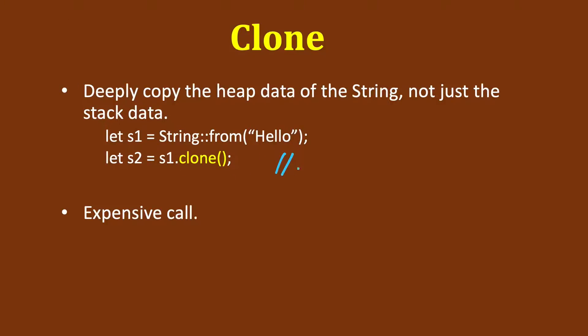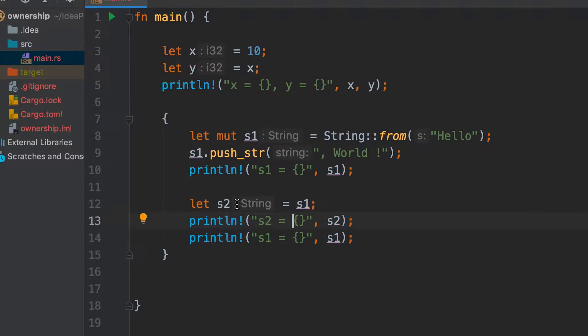Earlier it was s2 equal to s1 for move. Here we need to do s2 equal to s1 dot clone. Now you can use both s1 and s2. You can see that it's an expensive call because all the heap data is also cloned. So let's see this in the code.